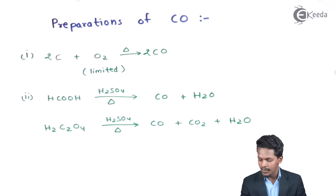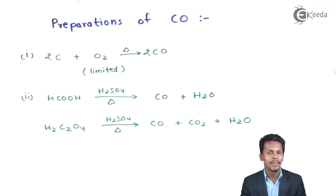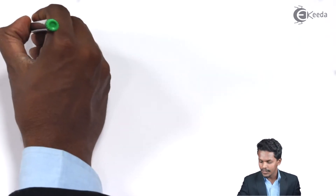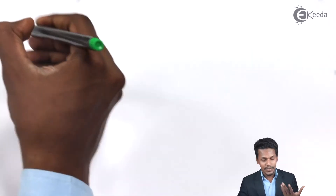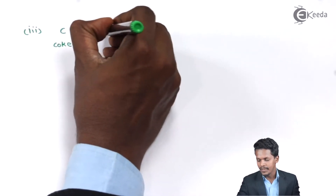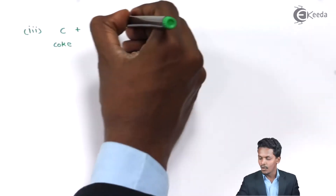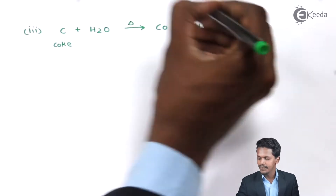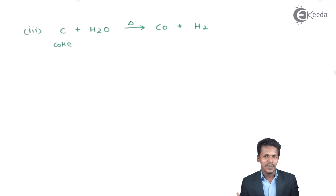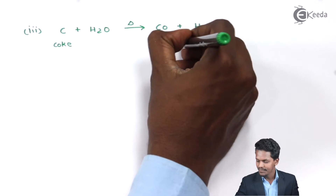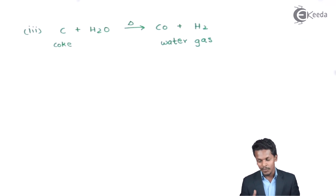There are also other reactions through which carbon monoxide can be obtained. Coke is very reactive — if coke reacts with H₂O and is heated, we get carbon monoxide along with H₂. This mixture of carbon monoxide and H₂ gas is known as water gas. This is how water gas is synthesized.